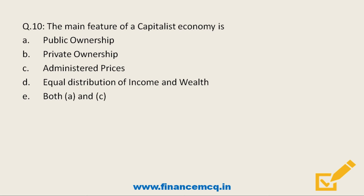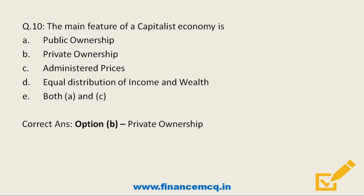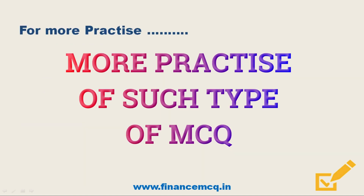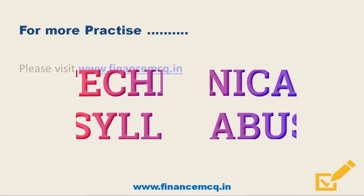Next question: The main feature of a capitalistic economy is — Option A: Public ownership, Option B: Private ownership, Option C: Administered prices, Option D: Equal distribution of income and wealth, Option E: Both A and C. A capitalistic economy, also called a free market economy, is one where the production of goods and services is based on supply and demand in the general market, and the means of production are owned by private individuals. So the correct answer is Option B — private ownership.